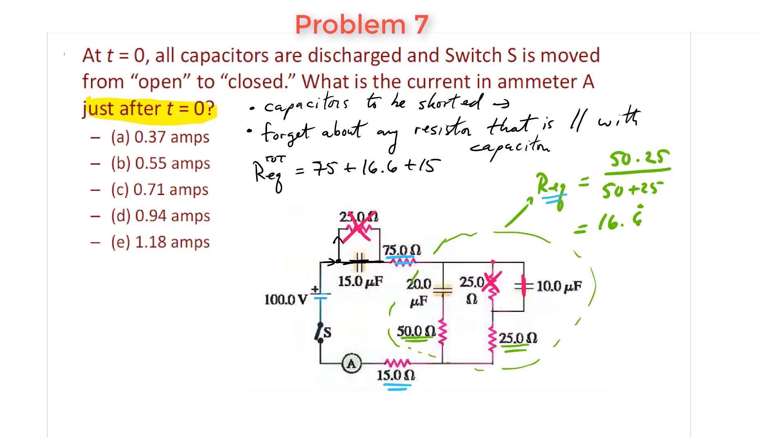So at the end of the day, this complete circuit gets simplified into something that has a 100 volt battery and one equivalent resistor, which is equal to the value I have up here. Okay. So the value of the current at the end of the day is simply going to be that voltage divided by the total equivalent resistance, 75 plus 16.6 plus 15. At the end I get a current equal to 0.94 ampere.